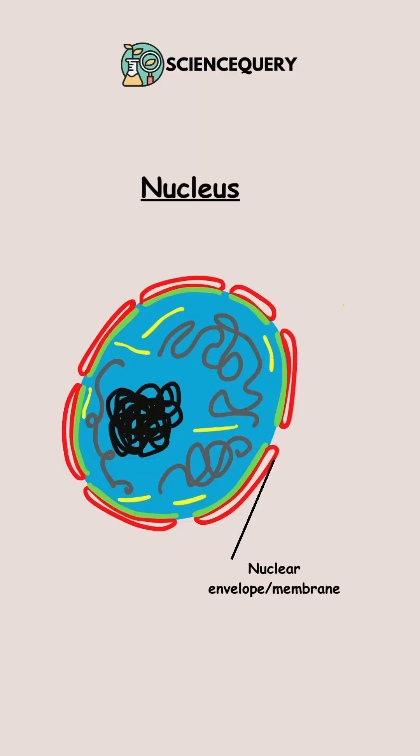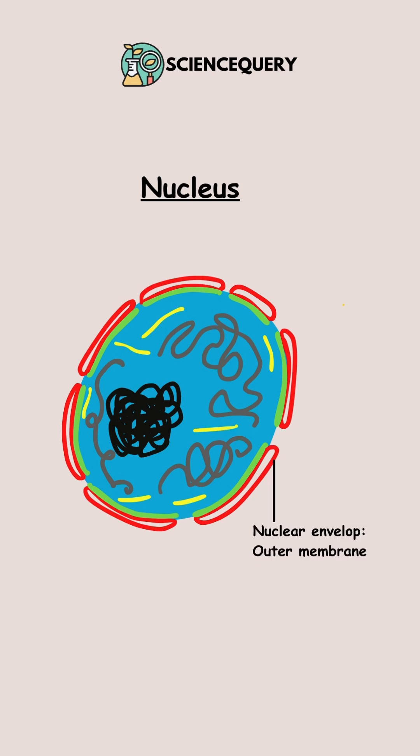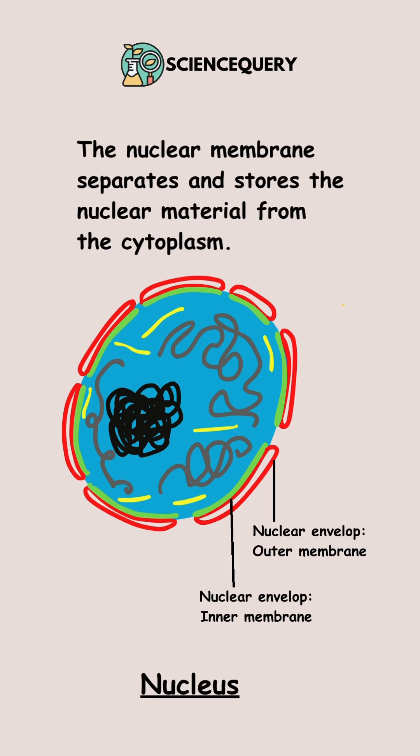The nucleus consists of the nuclear envelope, or nuclear membrane, which is further divided into the nuclear envelope outer membrane and the nuclear envelope inner membrane. The function of the nuclear membrane is to separate and store the nuclear material from the cytoplasm.